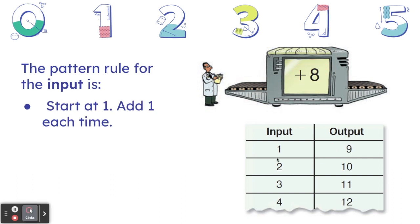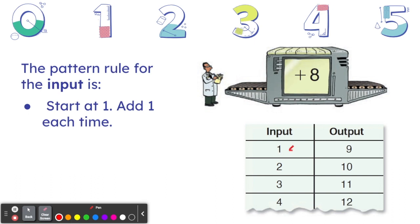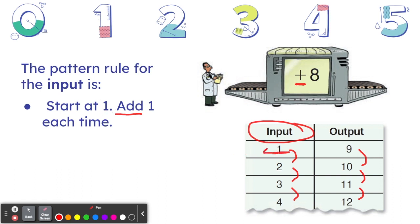When each input increases by one, the output also increases by one. So for the input, our pattern rule is start at one, add one each time. You can see our input increases by one each time. There's a trick to knowing that: there's an add — a plus sign — in our input output machine. So for our input, our pattern rule is start at one, add one each time: one plus one makes two, two plus one makes three, three plus one makes four. That's the pattern rule for the input.